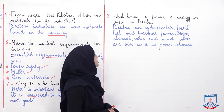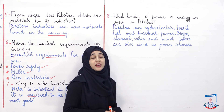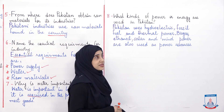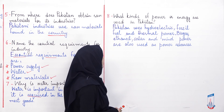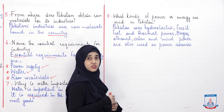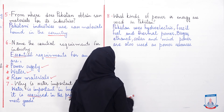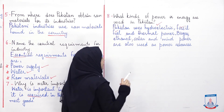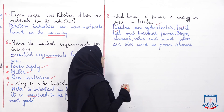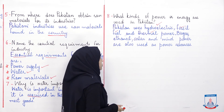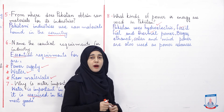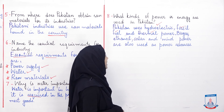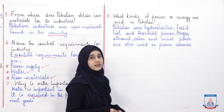Question eight: what kinds of power or energy are used in Pakistan? So Pakistan uses hydroelectric, fossil fuel and thermal power. Yani ki joh major forms of power hain joh hamare mulk mein use ki jati hain, woh hain hydroelectric — paani se bijli banana — fossil fuels — fossil fuels ko burn karna — and thermal power. Aur iske alawa heat se jo bhi bijli banai jati hai ya power use ki jati hai usko hum kehte hain thermal power. So hydroelectric power, fossil fuels and thermal power are the forms of power used in our country.